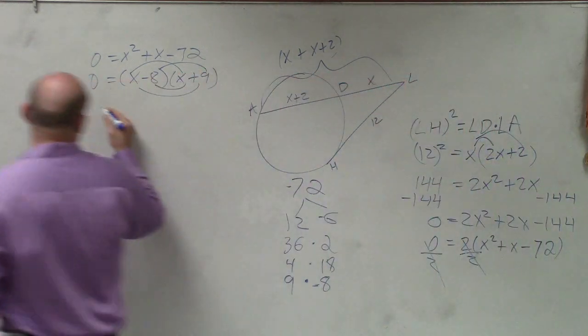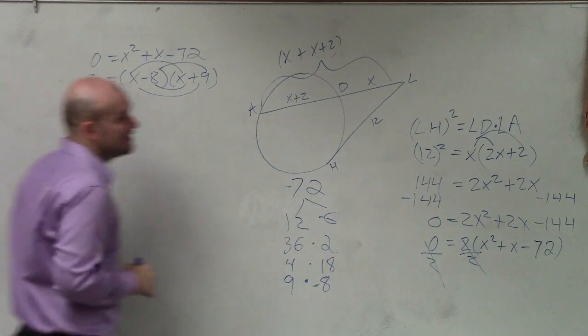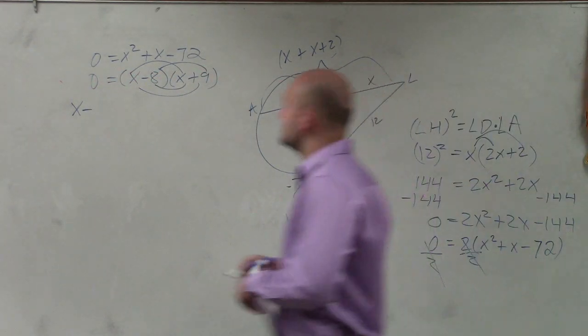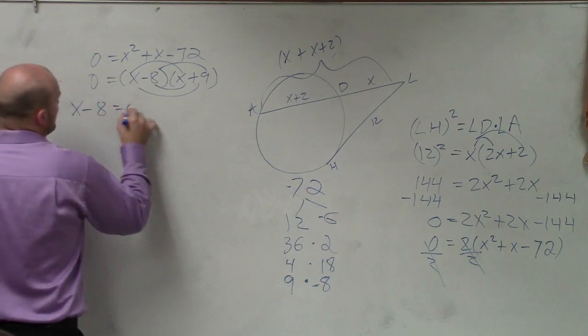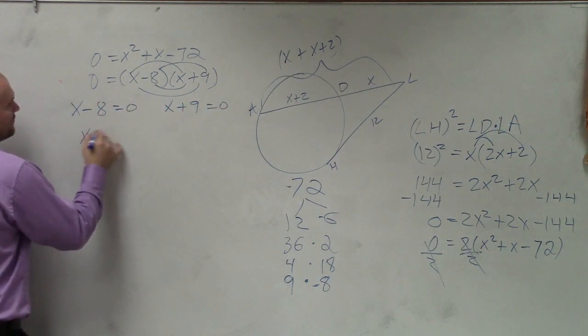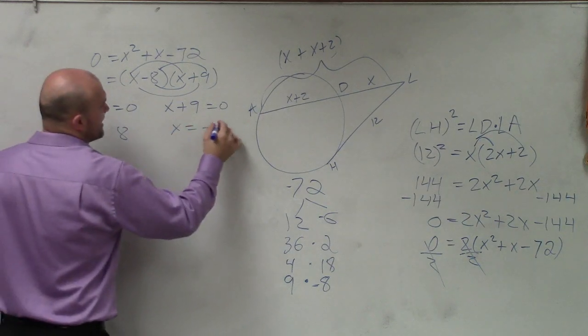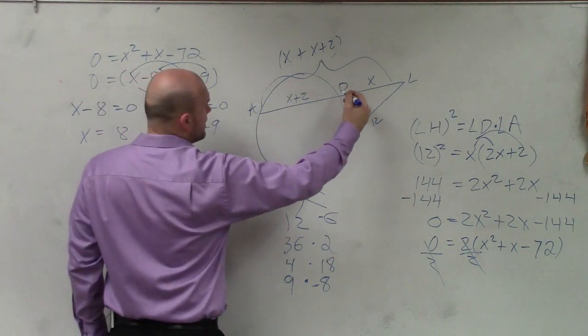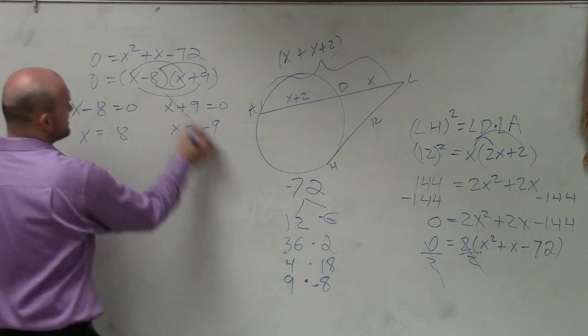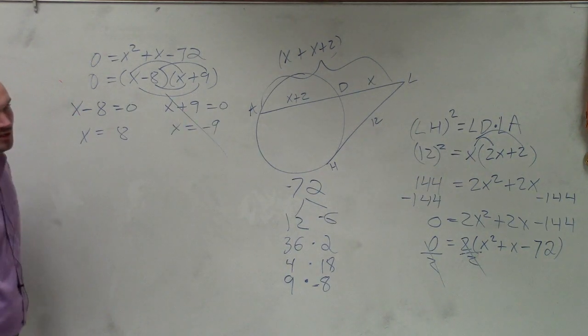So now, I apply the zero product property, X minus 8, thank you. X minus 8 equals 0, and X plus 9 equals 0. Then I solve, X equals 8, X equals negative 9. Since this difference is going to be positive, we know our value is going to equal 8.